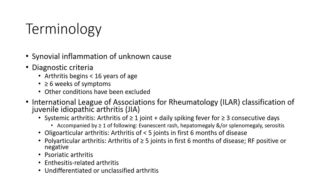The International League of Associations for Rheumatology (ILAR) classification of Juvenile Idiopathic Arthritis includes: Systemic arthritis, with accompanying features such as lymphadenopathy and/or splenomegaly, serositis.